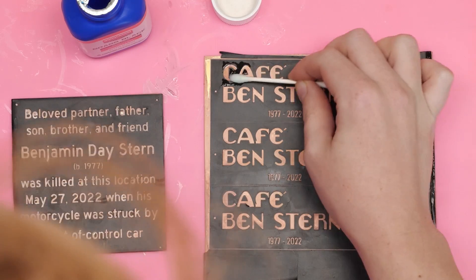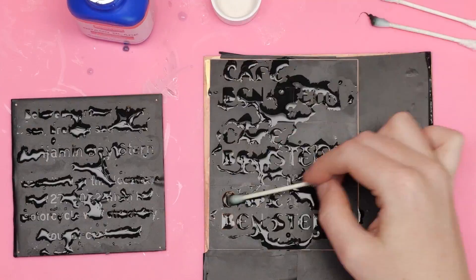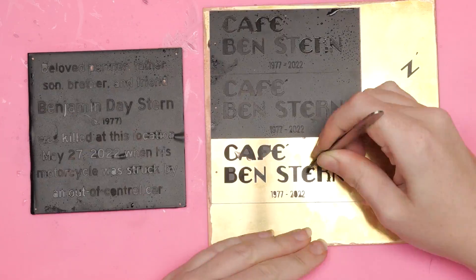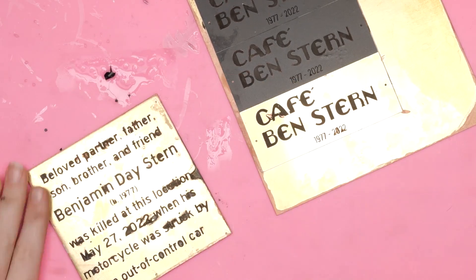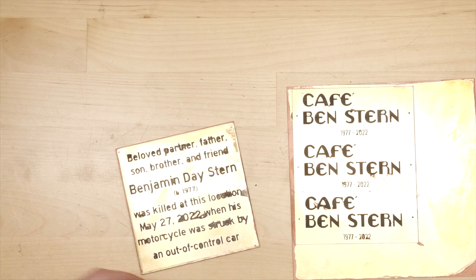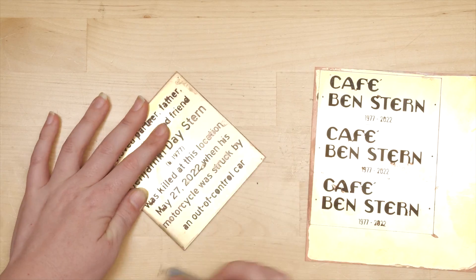Before removing the sticky vinyl, I applied some blackening solution to provide contrast to the lettering. Then I peeled away the vinyl to reveal the final design. The blackening solution got up under the sticker in a few places, but a quick scuff with a high-grit sanding pad cleaned it up quick.